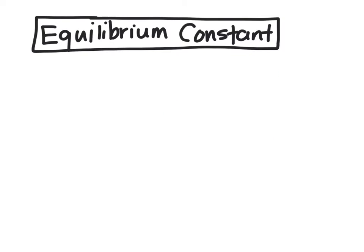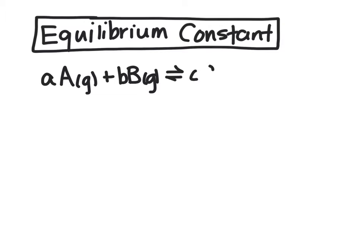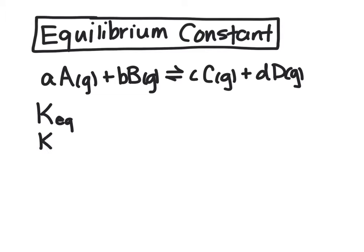Every equilibrium reaction can be described by something called an equilibrium constant. We're going to use our model reaction where the lowercase letters represent the coefficients and the uppercase letters represent the chemical species. You'll notice that these are all gases. Our equilibrium constant is given by the letter K and you'll see it written as either KEQ or KC. They mean the same thing.